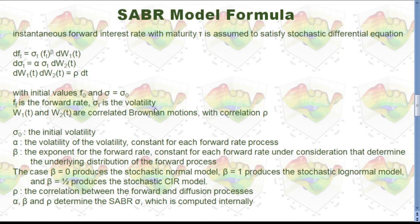Now, let's take a look at SABR model formula. There are three formulas here. Ft is the forward rate, the instantaneous forward interest rate with maturity T. Ft and sigma t is the volatility.